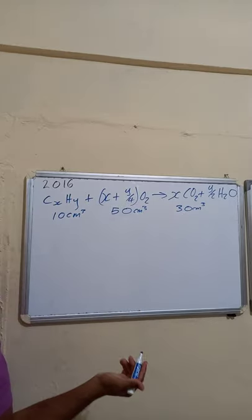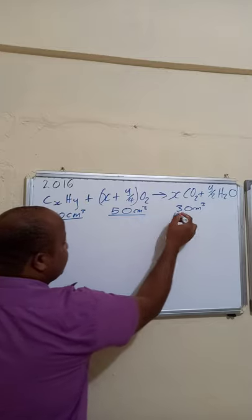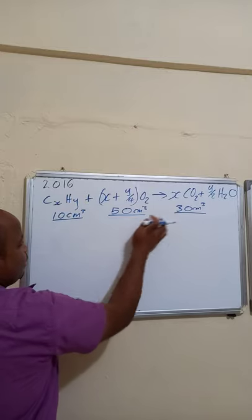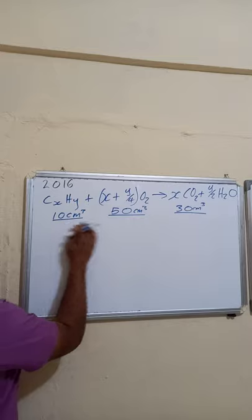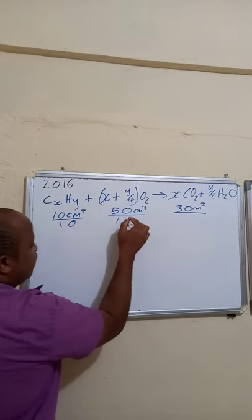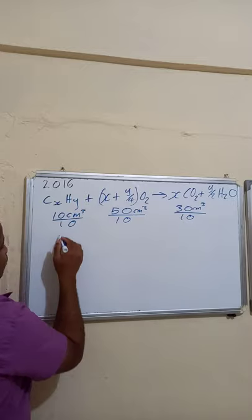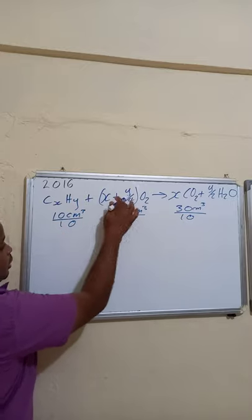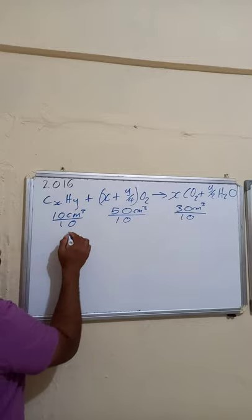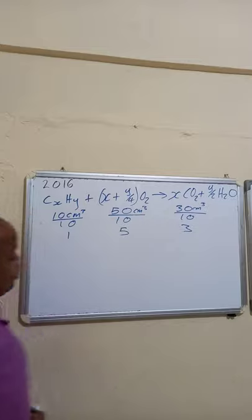You can divide each volume by the smallest — in this case 10 — to get the molar ratios. That gives you 1, 5, and 3 for the hydrocarbon, oxygen, and CO₂ respectively.